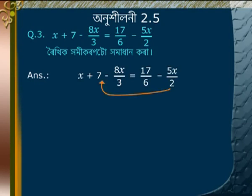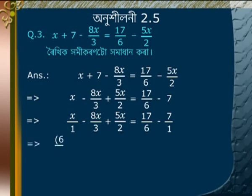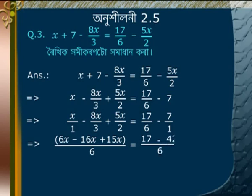Taking LCM of 6: (6x minus 16x plus 15x)/6 is equal to (17 minus 42)/6. Multiplying both sides by 6 gives 5x is equal to minus 25.